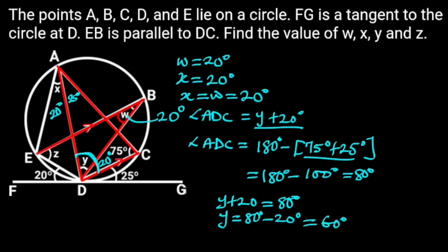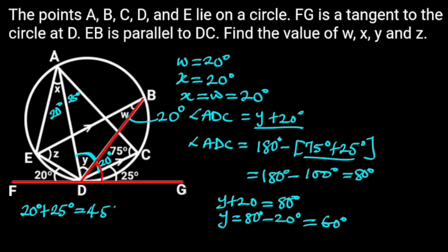Going further, to find Z, notice that chord DB made an angle with the tangent, that is 20 degrees plus 25 degrees, which is 45 degrees. And through this chord, an angle is made at point E which is in the alternate segment, and this angle is Z. Hence, from the circle theorem of angle in the alternate segment, we can say that Z is equal to 45 degrees, and the reason is angle in the alternate segment.